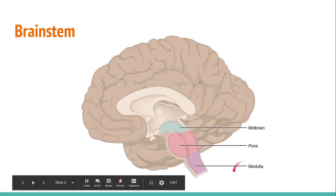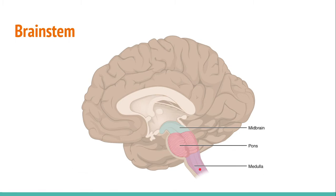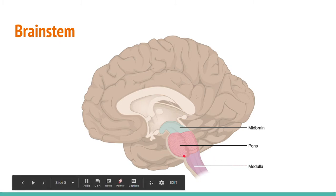Finally, the last part of the brainstem is the medulla oblongata — that's the full name — the purple part of the brainstem shown in the diagram, which most resembles a tail. It is responsible for maintaining vital bodily functions such as breathing and heart rate, and is found between the pons and your spinal cord.